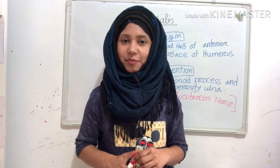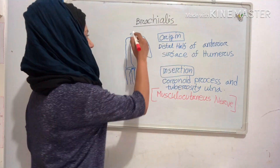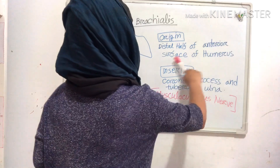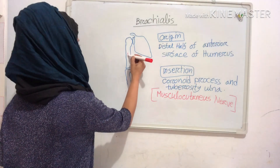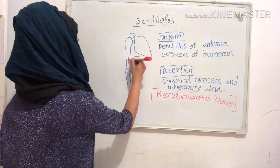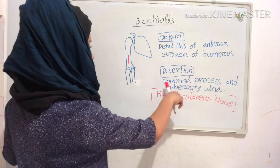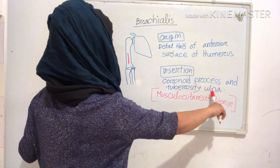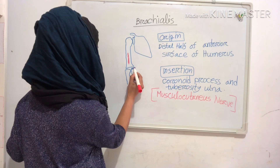Now we will see our brachialis muscle. The brachialis muscle originates from the distal half of the anterior surface of the humerus — this is the distal half of the anterior surface of the humerus. Its insertion is into the coronoid process and tuberosity of the ulna — this is the coronoid process of the ulna and this is the tuberosity of the ulna.